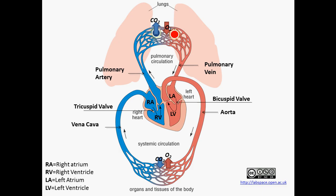At the lungs, gas exchange is going to happen via diffusion, where carbon dioxide is going to be moving from the blood back into the lungs, which you are going to breathe out. And your blood is going to pick up oxygen from the lungs so it can re-oxygenate again.